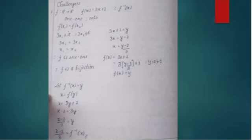For the first question, write the given data. Take x1 and x2, then f(x1) = 3x1 + 2 and f(x2) = 3x2 + 2. Subtracting both sides, the 2s cancel and the 3s cancel, giving x1 = x2. Therefore f(x) is one-to-one, so it is a bijection.